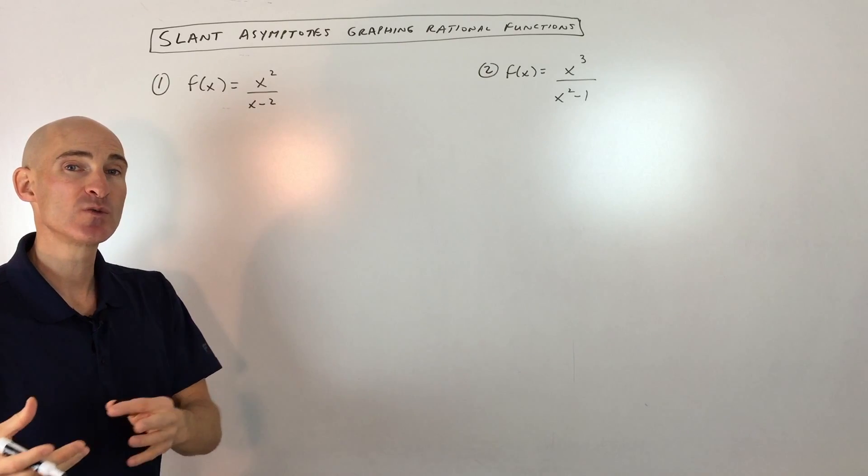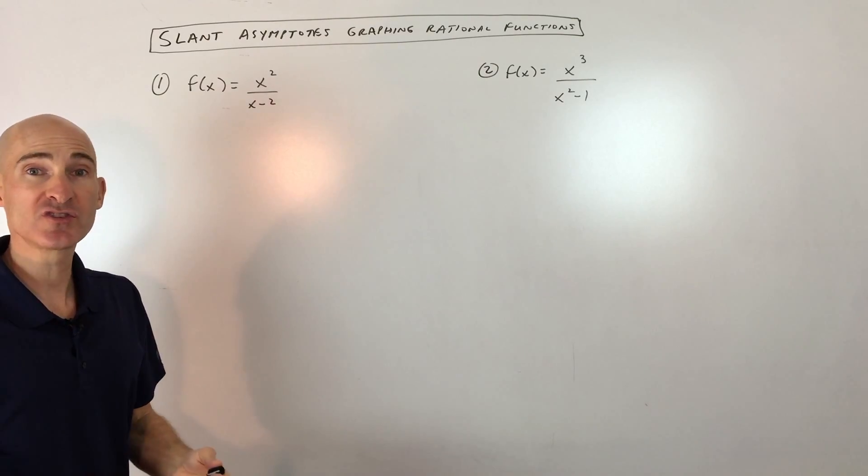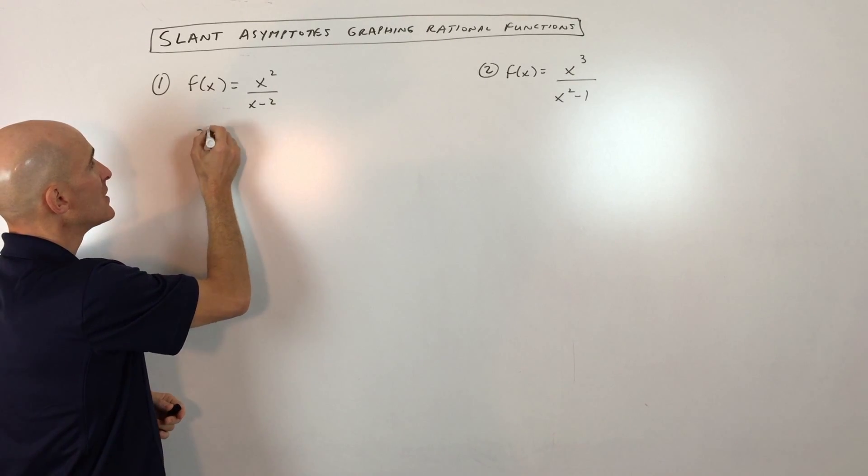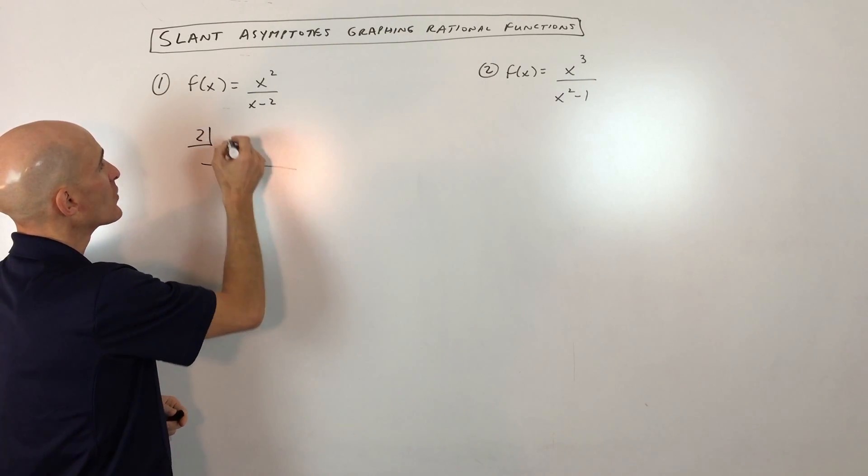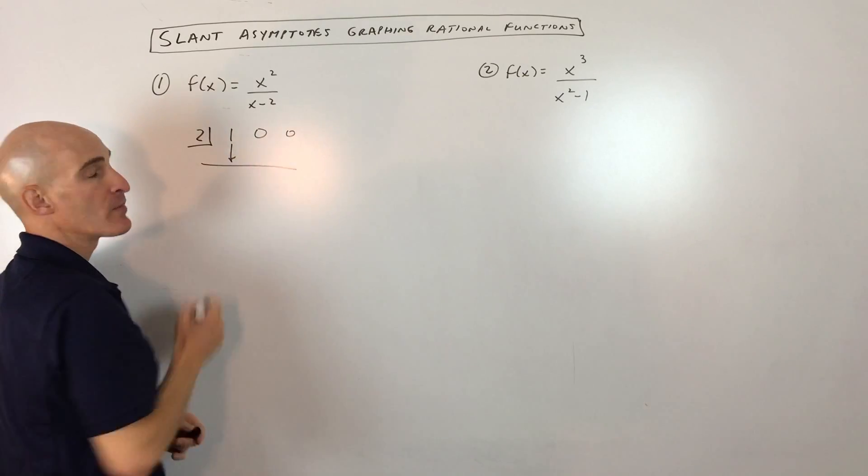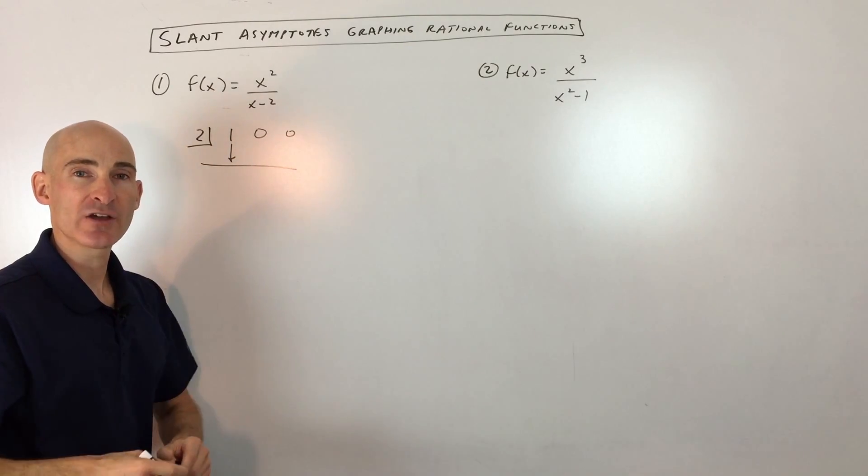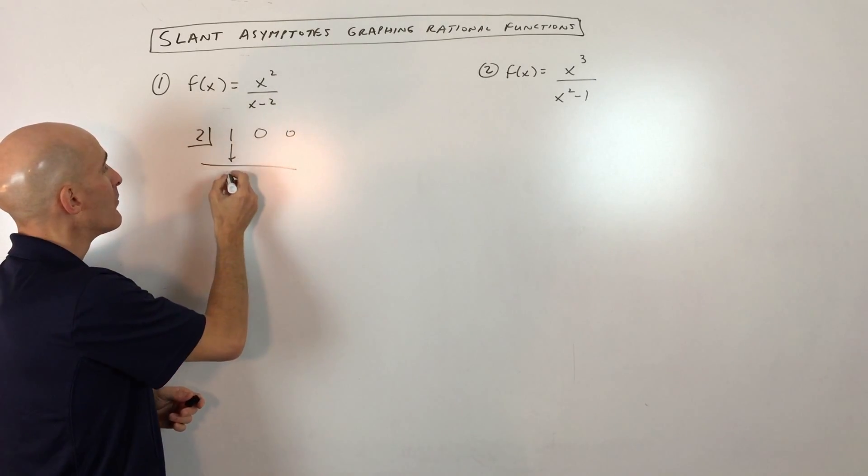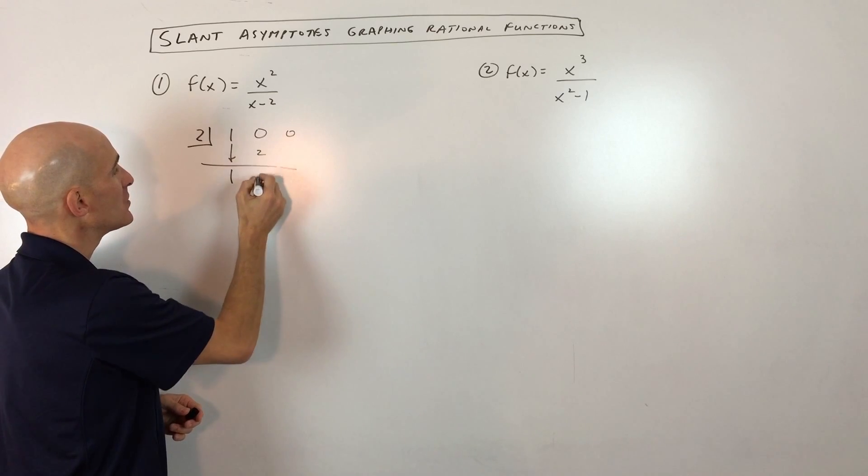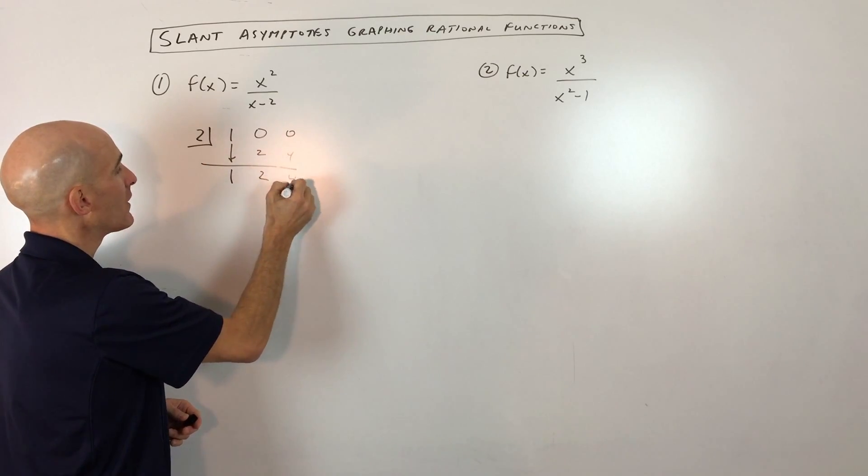The way we find the slant asymptote is we do polynomial long division, or we can do synthetic division. In this case, I'll show you the synthetic division. We're going to divide by x minus 2, so we have 1x squared, 0x, and 0 is our constant. If you need to review synthetic division, you can check out the video I did on that. But I'll also show you the polynomial long division so you can see both ways. So this is 2, 2, 4, and 4 is our remainder.